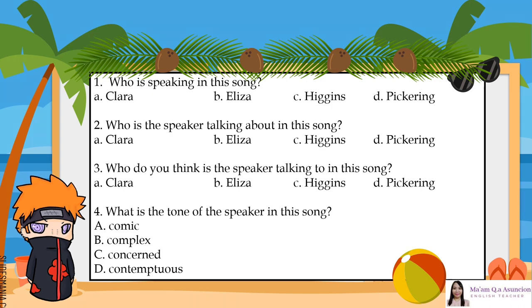Who is speaking in this song? A. Clara. B. Eliza. C. Higgins. D. Pickering. Who is the speaker talking about in this song? A. Clara. B. Eliza. C. Higgins. D. Pickering. Who do you think is the speaker talking to in this song? A. Clara. B. Eliza. C. Higgins. D. Pickering. What is the tone of the speaker in this song? A. Comic. B. Complex. C. Concerned. D. Contemptuous.